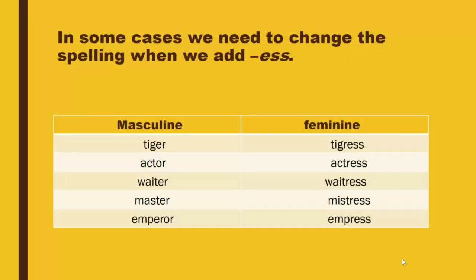In some cases, we need to change the spelling when we add -ess. For example: tiger is spelled T-I-G-E-R, but the feminine form tigress is spelled T-I-G-R-E-S-S. Actor is spelled A-C-T-O-R, but actress — we remove the O — is spelled A-C-T-R-E-S-S.